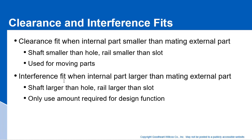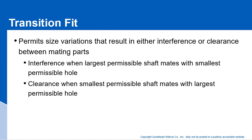Both an interference fit and a clearance fit apply under all tolerance conditions. If you have a transition fit, on the other hand, you could have a tolerance condition where in some cases it's going to be clearance between the hole and the shaft, and depending on where these parts fall in their tolerance range, it could be interference too. That's called a transition fit.